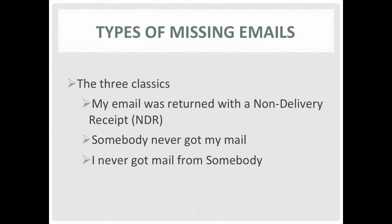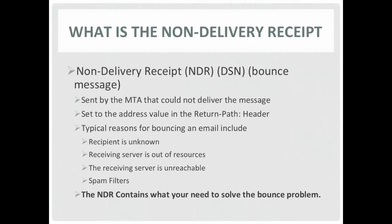Let's start by looking at the most typical case: the sender of a message receives a non-delivery receipt. The non-delivery receipt is commonly referred to as an NDR. It's also called a delivery status notification, or DSN, or simply the bounce message. It's sent to the return path address in the header of the bounce message by the MTA that cannot deliver or relay the email.